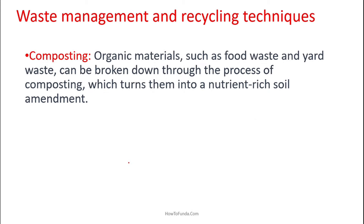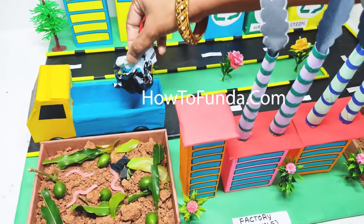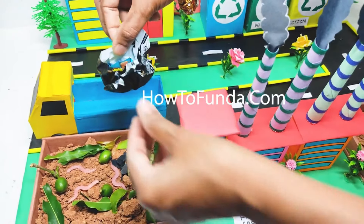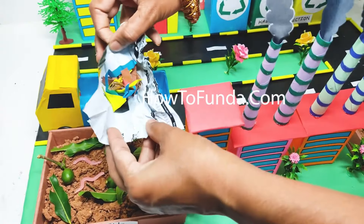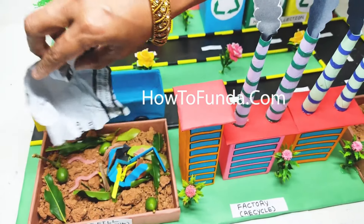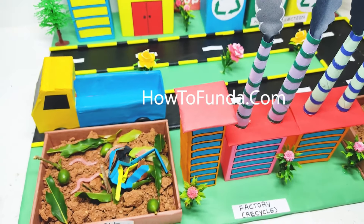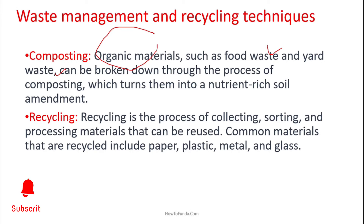Once we are able to sort and separate, wherever composting is applicable — like organic materials such as food waste and yard waste — those can be broken down, composted, and put back into your agricultural land. That is the composting process.